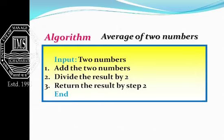That means we have to add two numbers, divide by two, and then calculate the average. That particular result is going to be returned and that returning value is the average of two numbers.